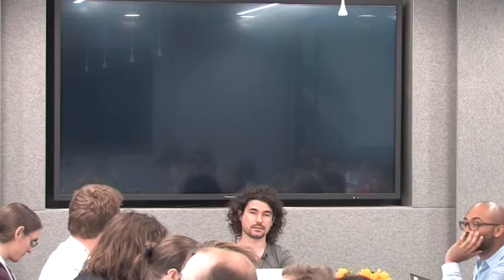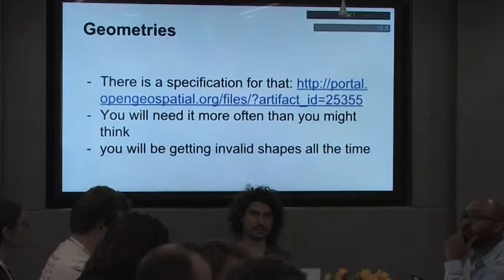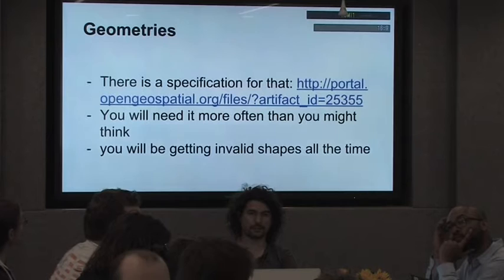Let's start with geospatial basics — the types of geometries you can find. It's obviously really trivial, and you probably know what it's about. It's basically all kinds of shapes we can imagine: points, lines, polygons, things like that. The geospatial industry is a very boring and precise one, and they created a specification for that. There are many non-trivial questions, so I highly encourage you to familiarize yourself with that specification link.